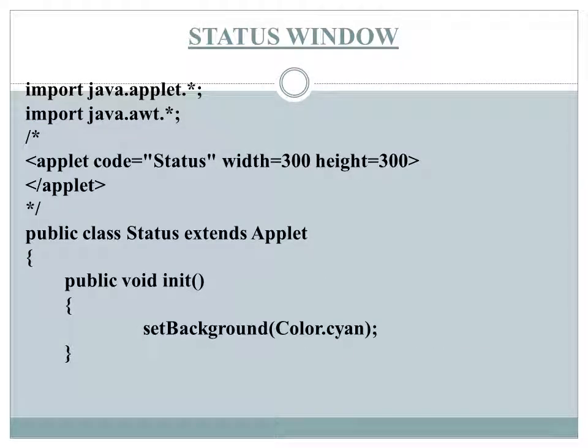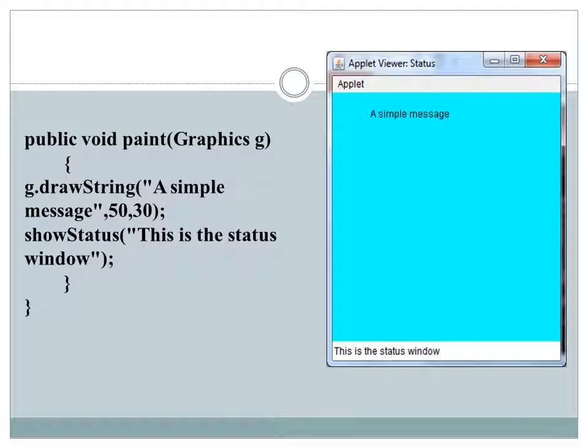Here is a sample program to illustrate the status window. We embed the applet code with the class name Status, extend the Applet superclass, use drawString to display a message in the applet window, and use the method showStatus to display a message at the bottom of the screen.